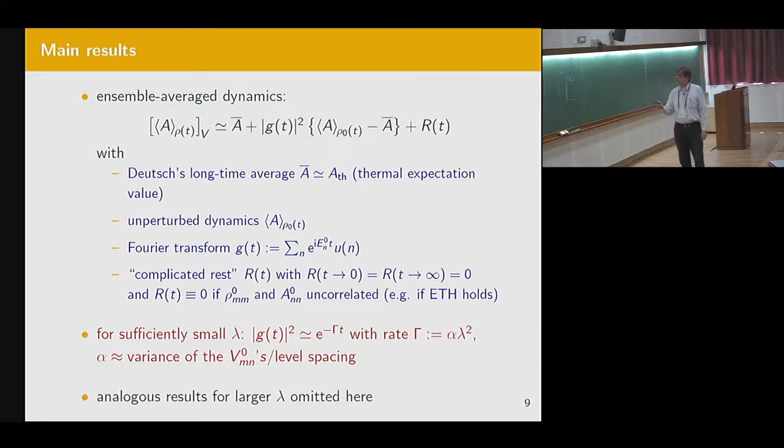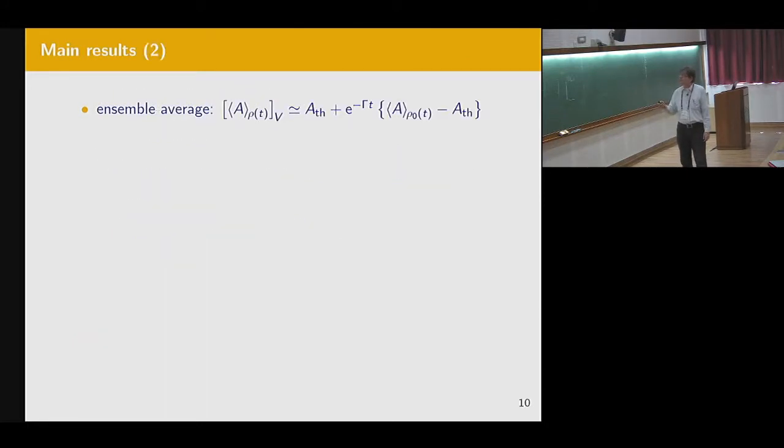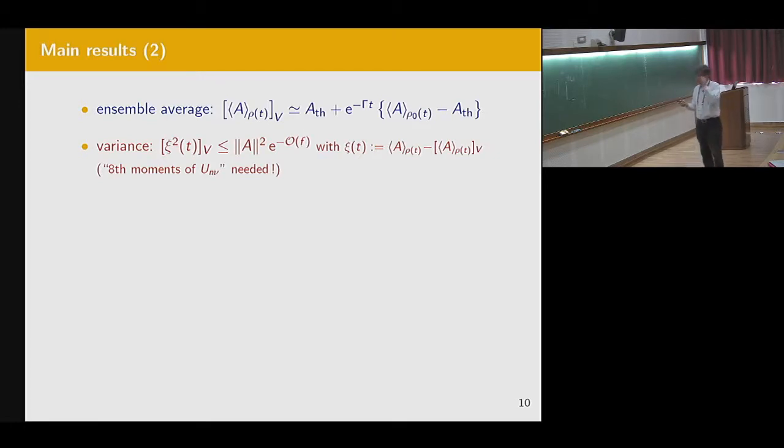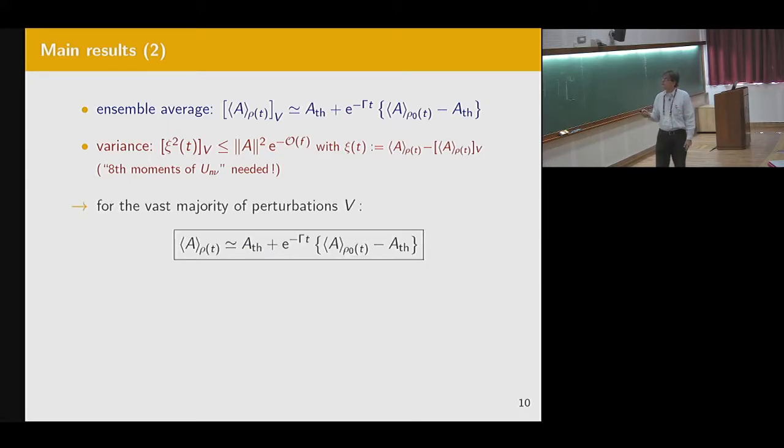So if I take all these things into account, I obtain the simplified conclusion. This is the thermal value. This is the exponential time dependence. This is the thermal value, and the rest is neglected. It's an approximation. Now, the variance is even more involved to evaluate. What you get for the variance: it's the operator norm of your observable times an exponentially small number in the degrees of freedom of the system. So this is a ridiculously small number. So this means this second moment is practically almost zero. So the variance is extremely small. So the spread in this random ensemble of Vs is very small around the mean behavior. So we conclude for the vast majority within this ensemble of perturbations, the true behavior is very close to the average behavior.